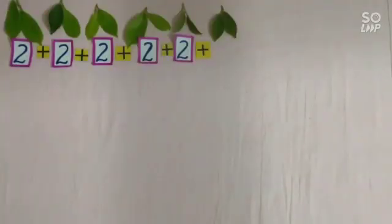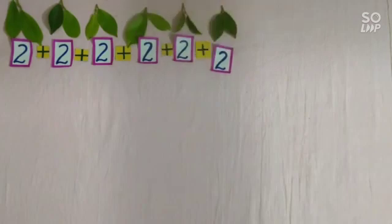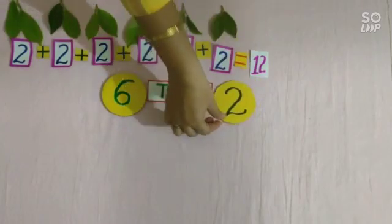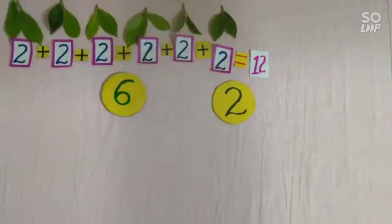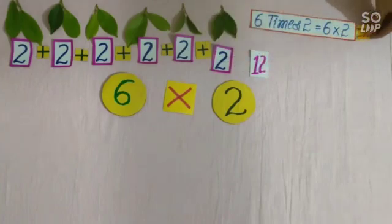So students, we have 6 groups of 2. So students, we will write here: 6 times 2. In place of times, we will put the sign of multiply. And we will write this: 6 times 2 is equal to 6 multiplied by 2 is equal to 12.